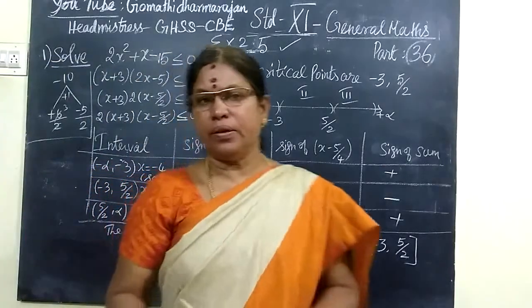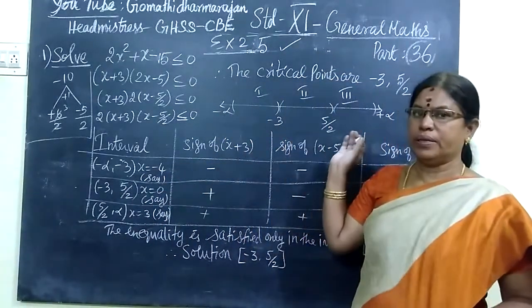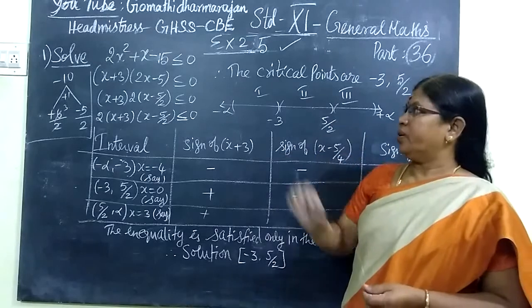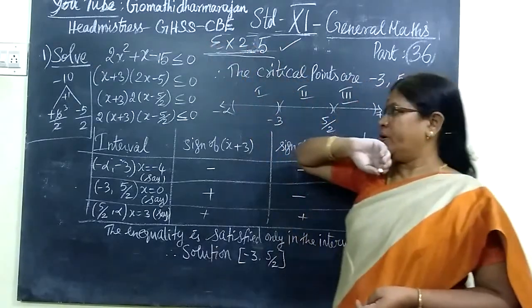So, coming to the next class, this is for 11th Standard Gentleman's Course 30 Peaks. First question, Exercise 2.5. Exercise 2.5 is the first question.